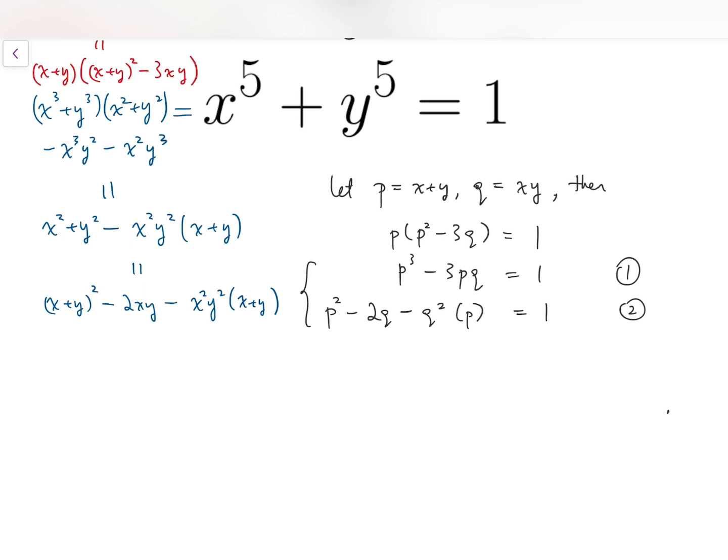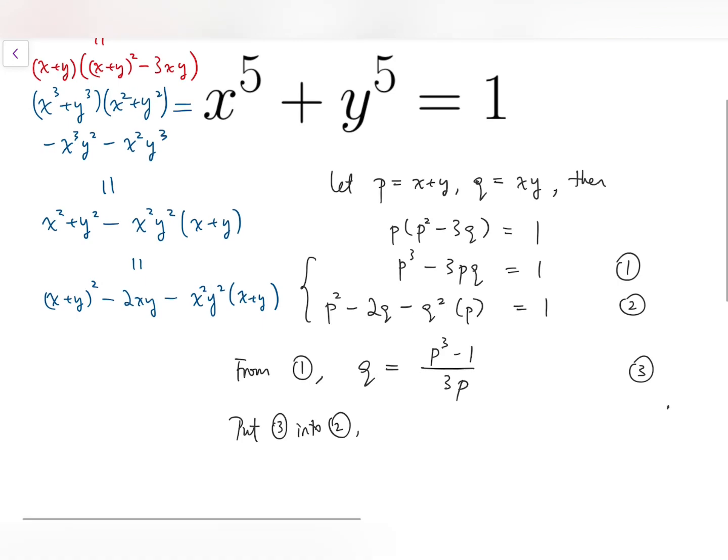So I'm going to use the method of substitution. From the first equation, I'm going to make q the subject. Because there's only one term involving q, but there are two terms involving p, and it's hard to extract the p out. So q equals p cubed minus 1 divided by 3p. That's the third equation. Then I'll put this into the other one.